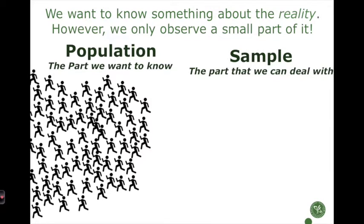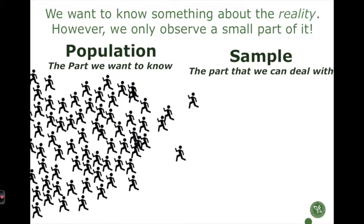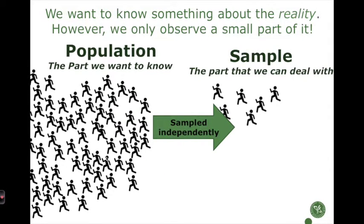The basic concept is that we have a population and we want to know about it. The population is basically everything in the world — if we want to characterize people, it means all people who have ever been, are now, and will always be. We cannot measure all of them, so what we can do is take a sample from this population — an independent sample — so instead of all the people in the world we take out six people.